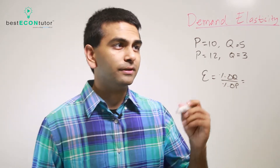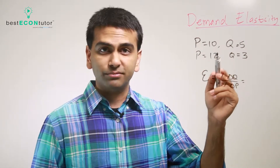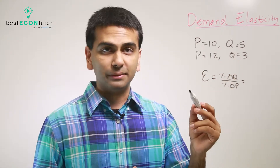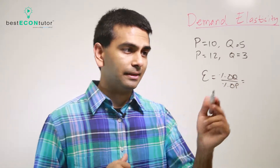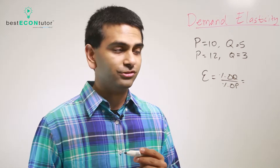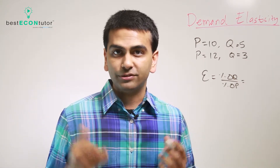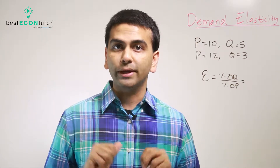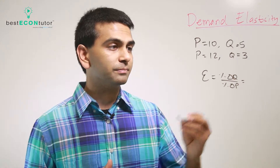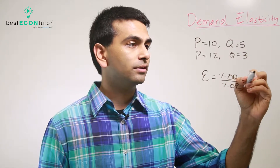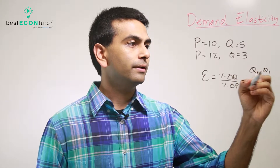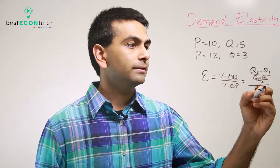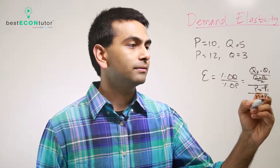Let's take a look at an example. If initially your price is $10 and the quantity is 5, but when the price goes up to $12 you only buy 3, what's the elasticity? We know it's percent change in Q over percent change in P, but how do you actually calculate percent change? Most econ instructors use what's called the midpoint rule: Q2 minus Q1 over (Q1 plus Q2)/2, all over P2 minus P1 over (P1 plus P2)/2.